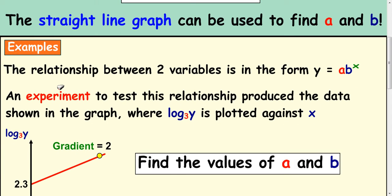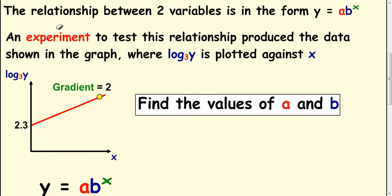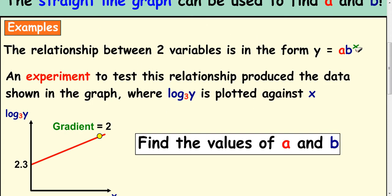So let's look at an example here. The relationship between two variables is in the form y equals ab to the x. An experiment to test this relationship produced the data shown in the graph, where log y to the base 3 is plotted against x. So you can see x against log y, not log of both. Our job is to work out the values of a and b.